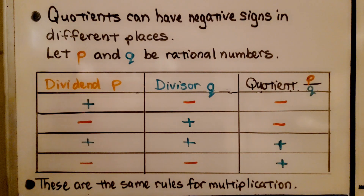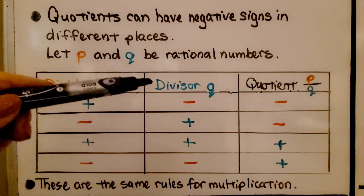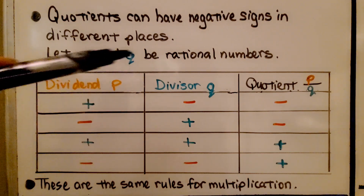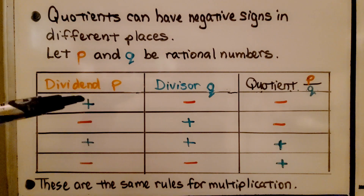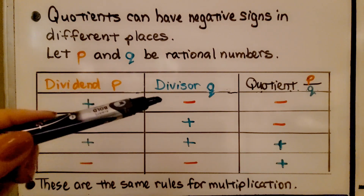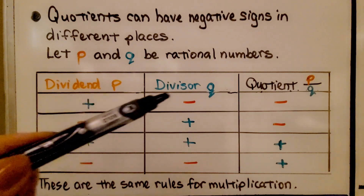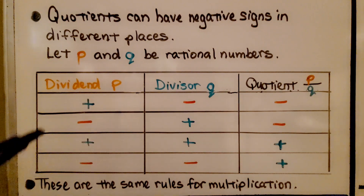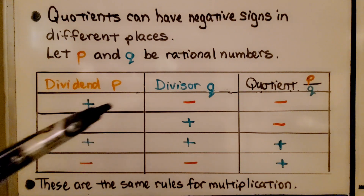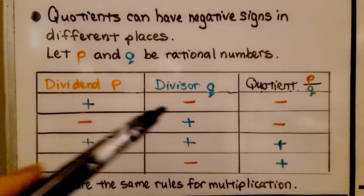We're going to let p and q be rational numbers. The dividend p is the numerator, and the divisor q is the denominator. If we have a positive dividend and a negative divisor, the quotient of p divided by q is going to be negative — they have unlike signs. If the dividend is negative and the divisor is positive, it's still negative. We have unlike signs.